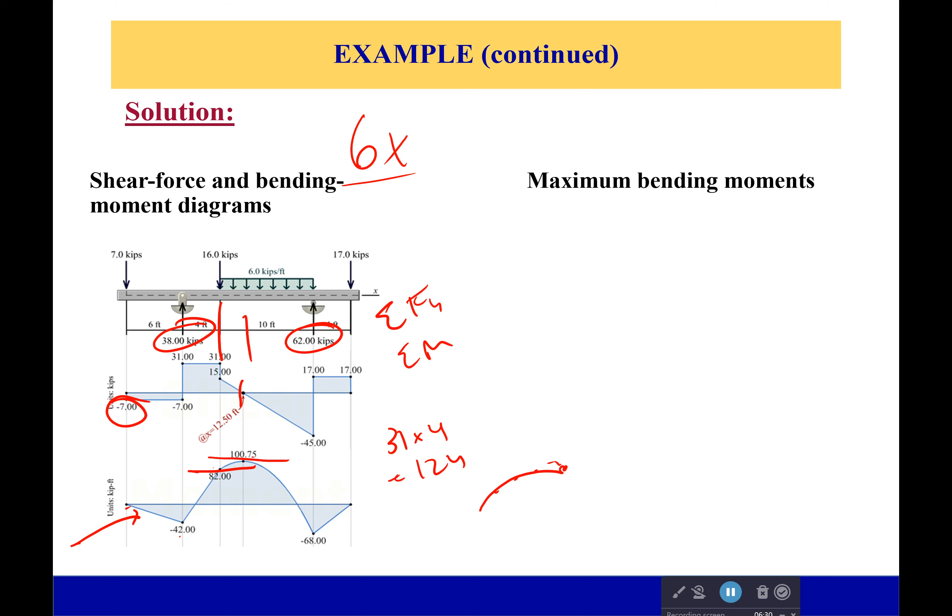Then it will keep on decreasing down to negative 68. If I want to know how it decreased, I can simply take the area right here and figure out how much has gone down from 100.75. Then it will go straight back up to zero because this is nice and flat and constant.